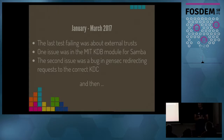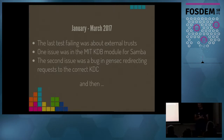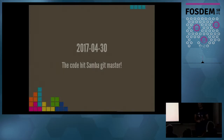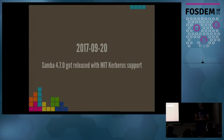From January to March 2017, there was only one test failing - related to external trusts. We discovered one issue in the MIT KDB module on our side, and a second bug in GenSec redirecting requests to the wrong DC. We fixed both issues and the test was passing. In April 2017, the code finally hit master. We were done with daily rebases, everything was upstream and working well. Last September, Samba 4.7 was released as the first release with MIT Kerberos support for Samba Active Directory.